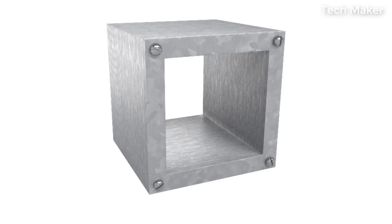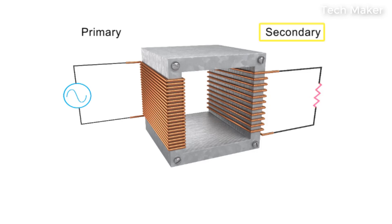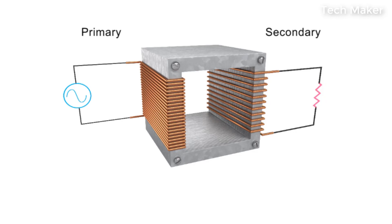Transformers are composed of an iron core ring wrapped in coils. One coil is connected to an AC input voltage and is called the primary coil. The other coil is connected to an output circuit with a load resistance and is called the secondary coil. The two coils are well insulated from each other and do not form a physical electrical connection. This gives a transformer its unique electricity altering properties.